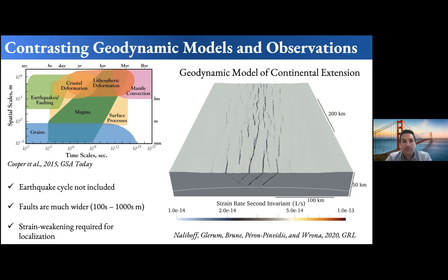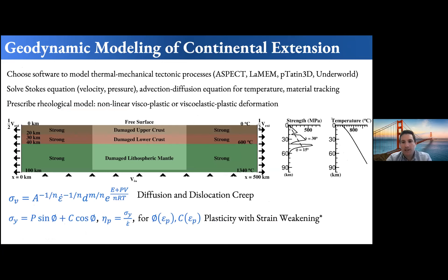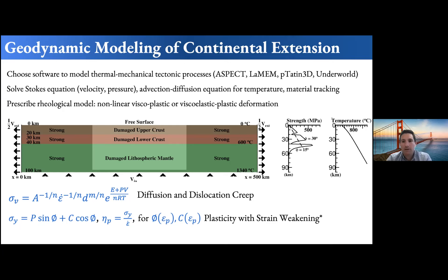We also need to prescribe some form of strain weakening in order to localize these faults. For how this modeling is typically done: the starting point is to choose software to model these thermal-tectonic processes in 3D. There is now a wealth of options — four open-source codes: ASPECT, LEMM, pTatin3D, and Underworld — which are well-documented, well-tested, and can run highly non-linear models in 3D efficiently over hundreds to tens of thousands of processors. All of the work here uses ASPECT, but all four codes have very similar features.